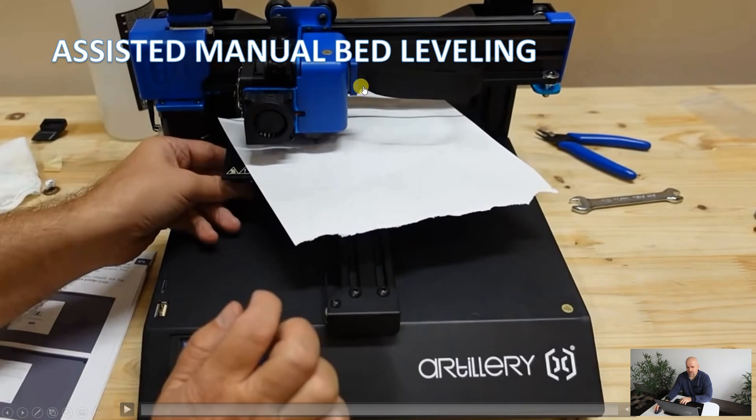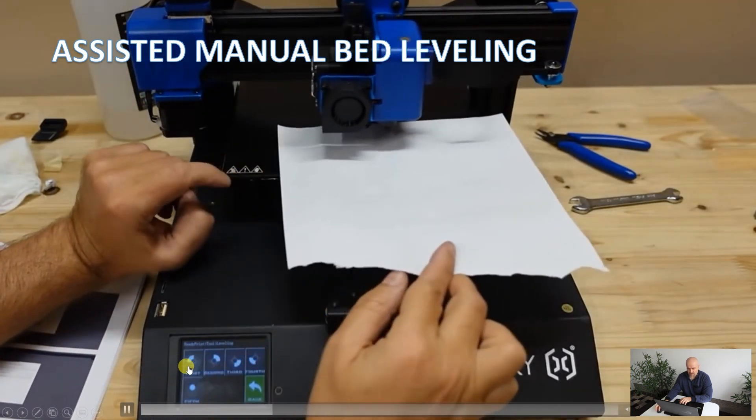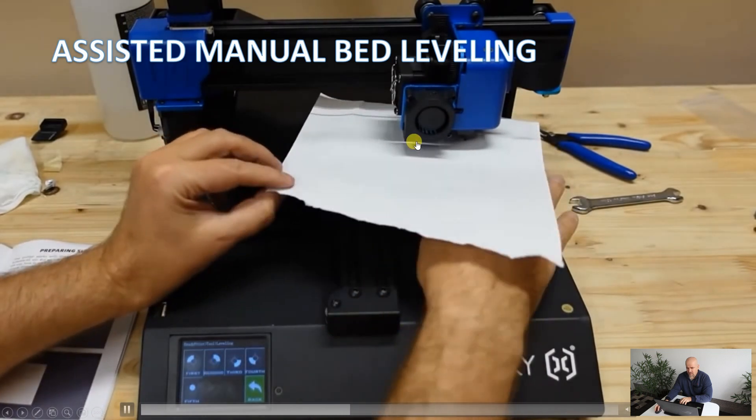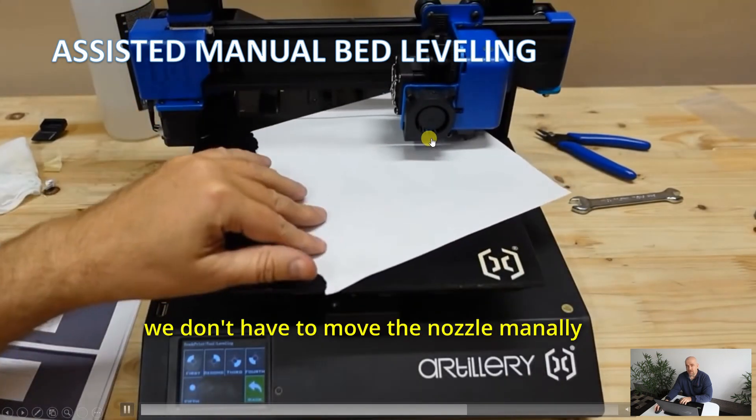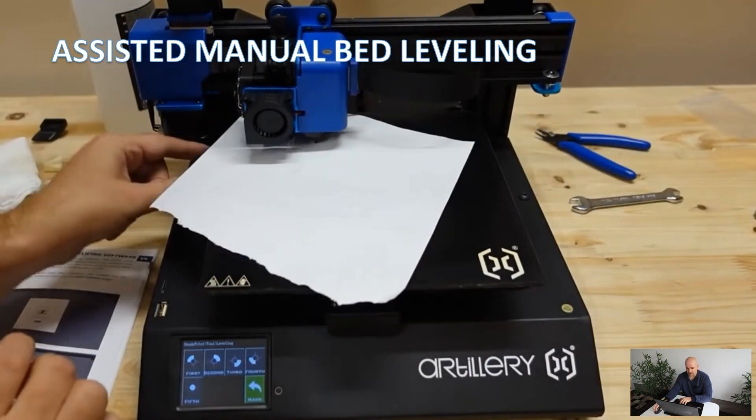What is assisted manual bed leveling? Well, here you can see the procedure where we have these buttons, and by pressing these buttons the nozzle will be moved by the printer above the knob, and all we have to do is rotate the knob to get the perfect friction between the paper and the nozzle.